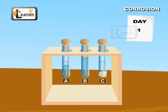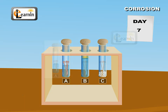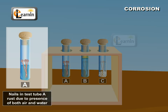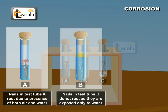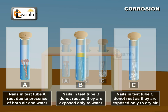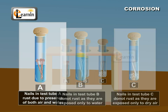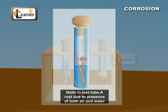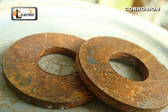The test tubes should be left undisturbed for a few days and then observed. Note that the nails in test tube A are exposed to both air and water, the nails in test tube B are exposed only to water, and the nails in test tube C are exposed to dry air. So, it's clear from this experiment that both air and water are needed for the rusting of iron. By keeping iron substances away from both air and water, we can prevent them from rusting.